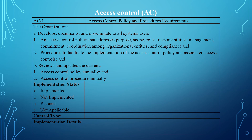Looking at the lower section that covers control type, there are various control types: common controls, hybrid controls, system-specific controls, and inherited controls. Common controls are applied organization-wide and can be used by multiple systems. Hybrid controls are a combination of common and system-specific controls and can be applied to two different systems at the same time. System-specific controls are specifically implemented for a single information system. Inherited controls are controls inherited from a parent system or a system offering controls for inheritance.